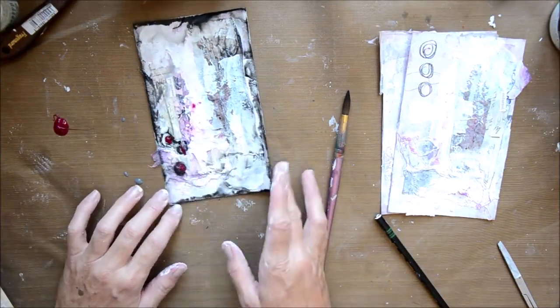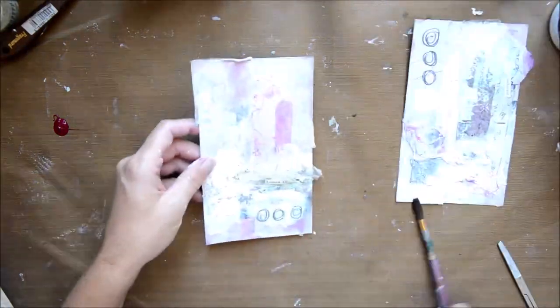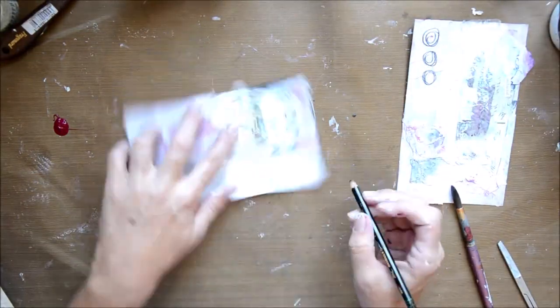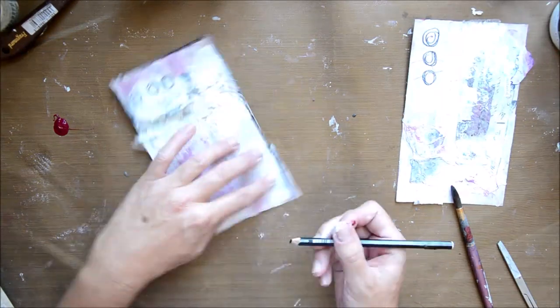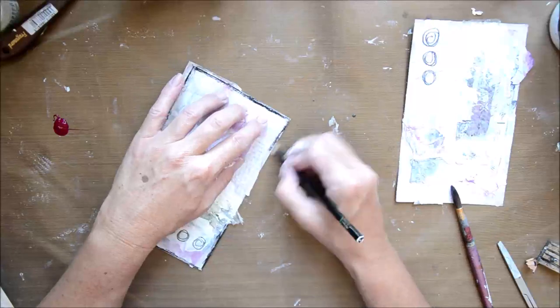Then I've just got some Atelier acrylic in a quinacridone red violet, and I've just dotted the centers of those pieces. When it actually dries, they're not that bright, so I go in again and redot them.